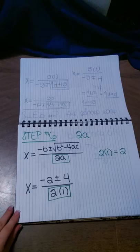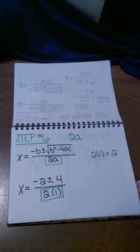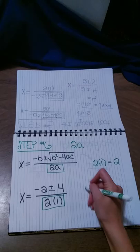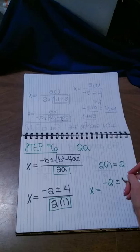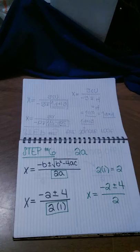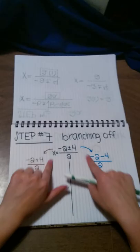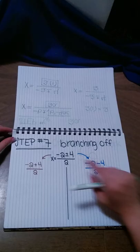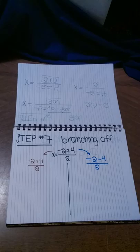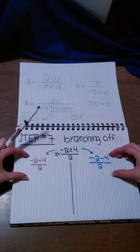Step number 6 is to solve 2a — that's just the denominator in our quadratic equation. Looking at our example, that chunk is just 2 times 1. Since our a is just 1, that's pretty easy — that's just 2. You could have probably knocked that out earlier, but just to make sure you get this step, because a won't always be that easy. Sometimes you'll have to actually multiply it out. So we write it out again as x equals negative 2 plus or minus 4, all over 2.